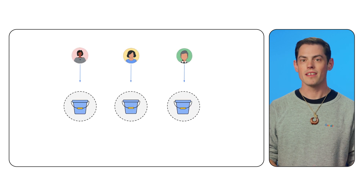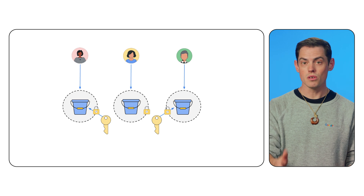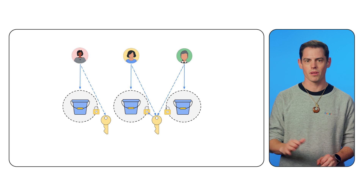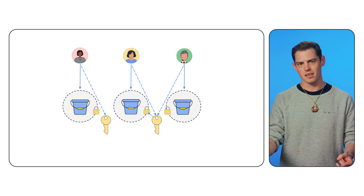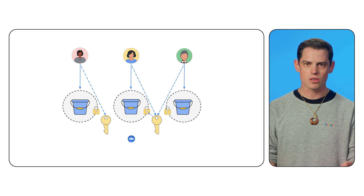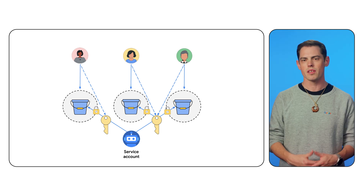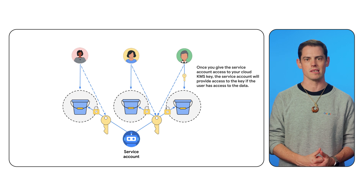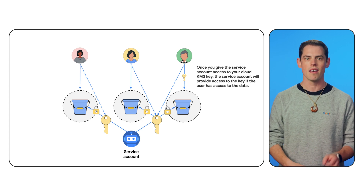Now you've created a bucket and your teammates need access to it. Your bucket is encrypted with a key that you've created — how do you manage access? You do not need access to the key separately from the data. Instead of managing access to both data and keys, each Cloud project has a service account for each service that performs encryption and decryption with customer managed keys. The service account is like a concierge that keeps track of who should have access to the keys. Once you give the service account access to your Cloud KMS key, that service account will use that key to protect your bucket.